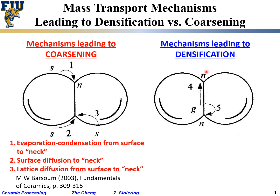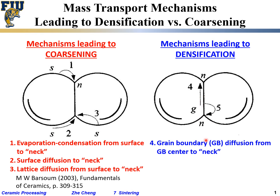In comparison, there are another two or three mechanisms that lead to densification. The first one, labeled number four, is what people call grain boundary (GB) diffusion — from the center of the grain boundary to the neck. The other one, mechanism five, is lattice diffusion from the grain boundary location toward the neck, but instead of going along the grain boundary, it goes into the lattice or bulk of the material and then to the neck.